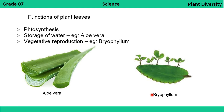The main function of the plant leaf is photosynthesis — producing food in the presence of sunlight using water and carbon dioxide. Leaves also serve for storage of water, with aloe vera being a good example. The bryophyllum leaf is an example of vegetative propagation, as new plants can be grown from this leaf.